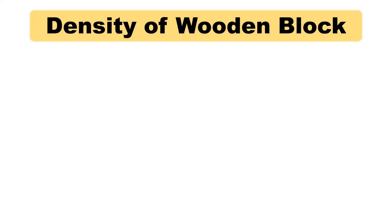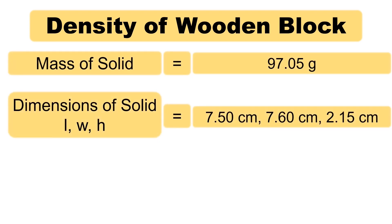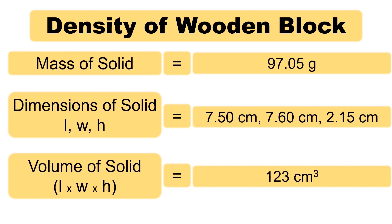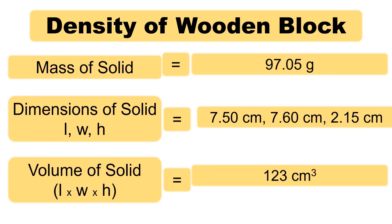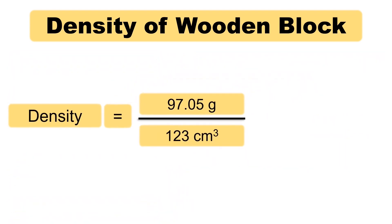Here's what the data section looks like for the wooden block. Be sure to report the correct significant figures when carrying out your calculations. The density of the wooden block is 0.789 grams per centimeter cubed.